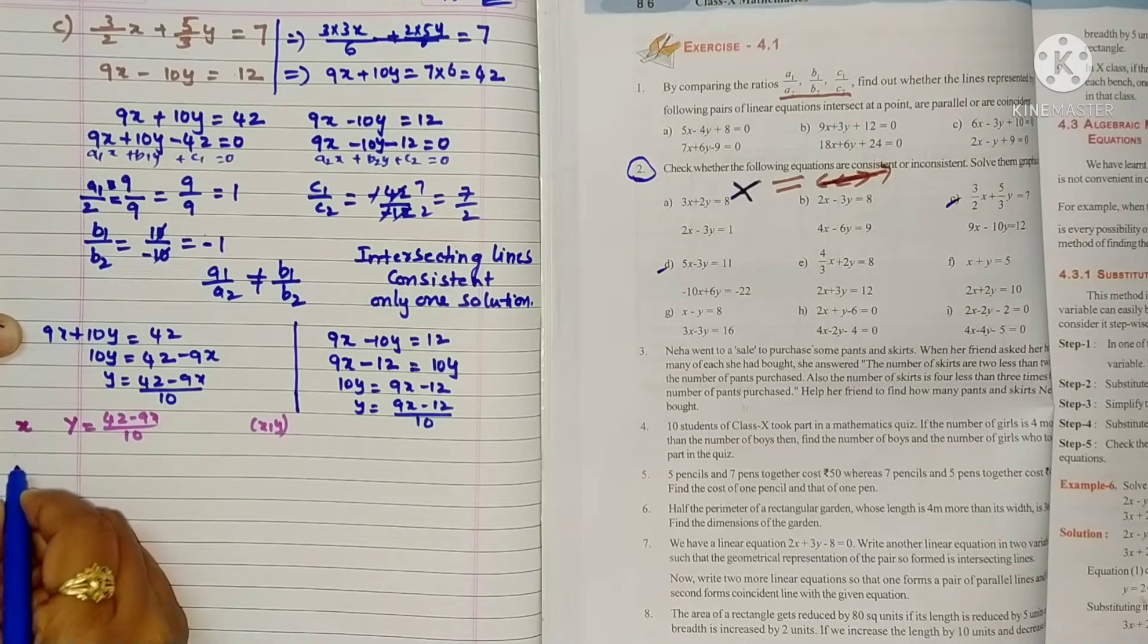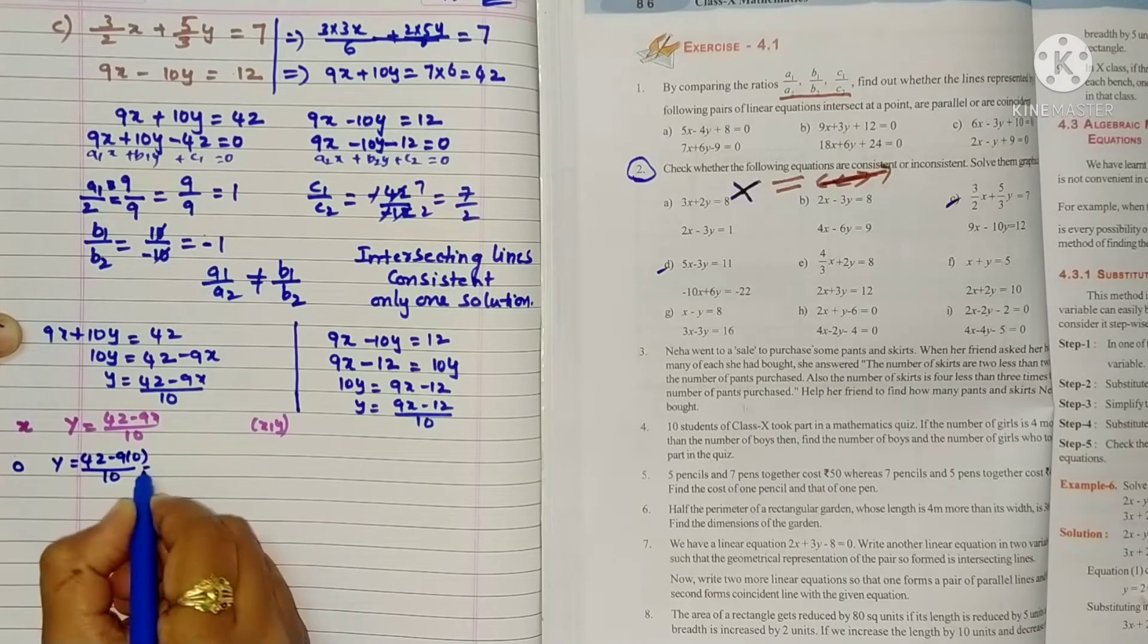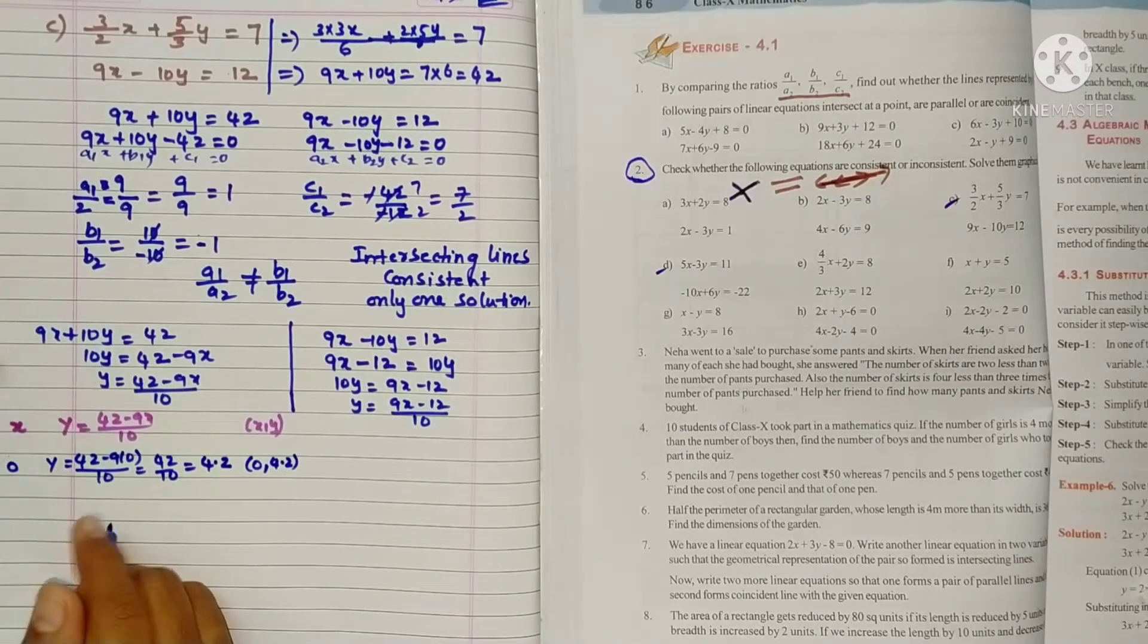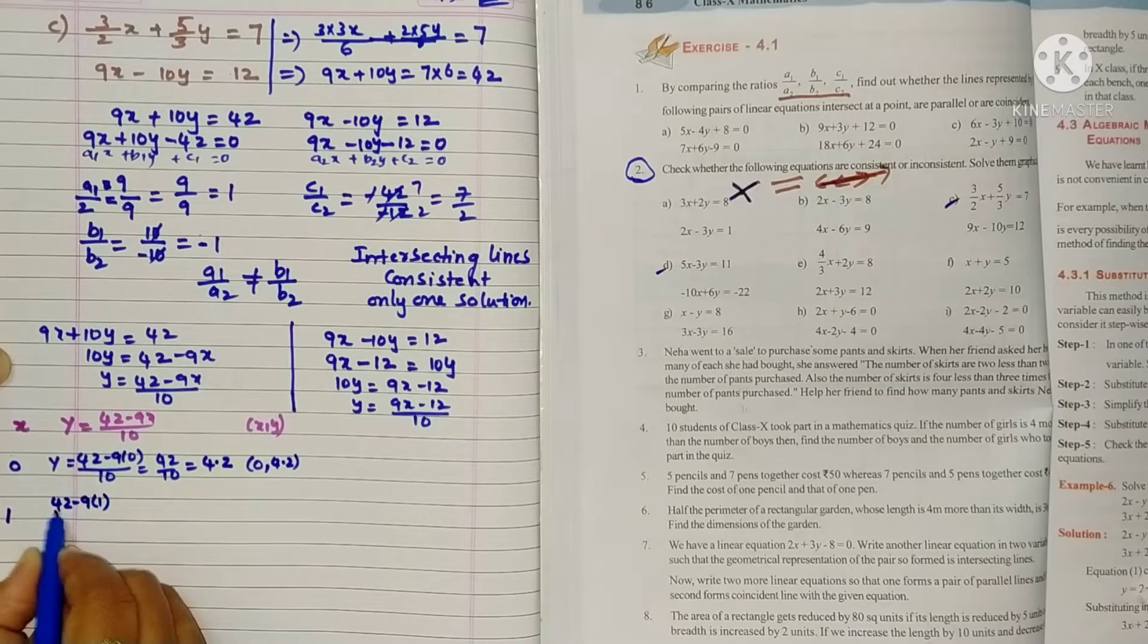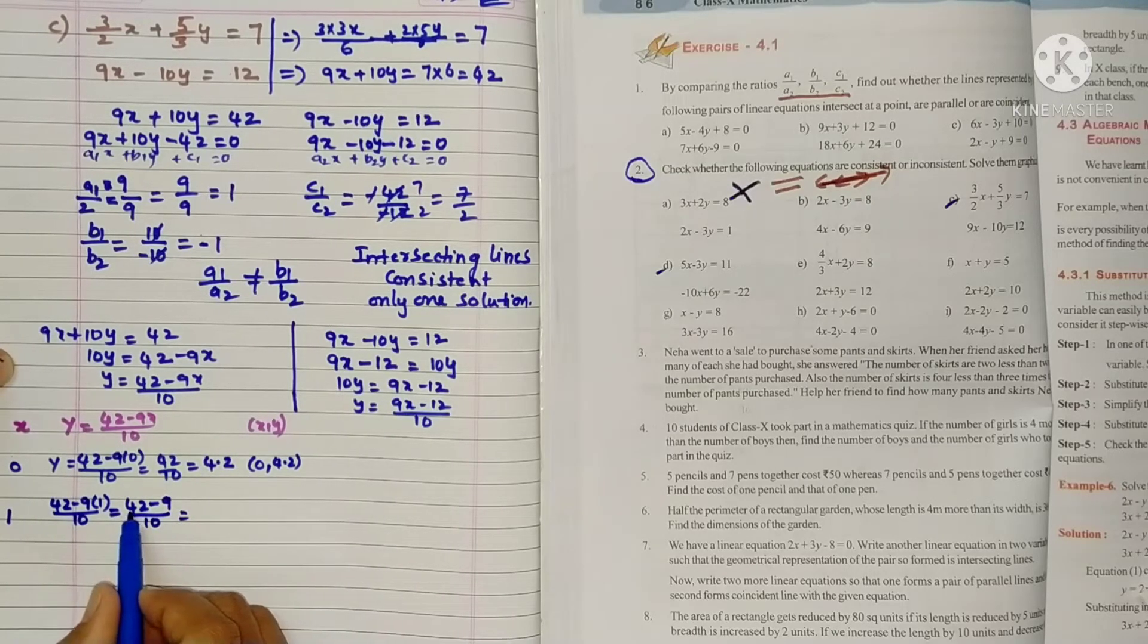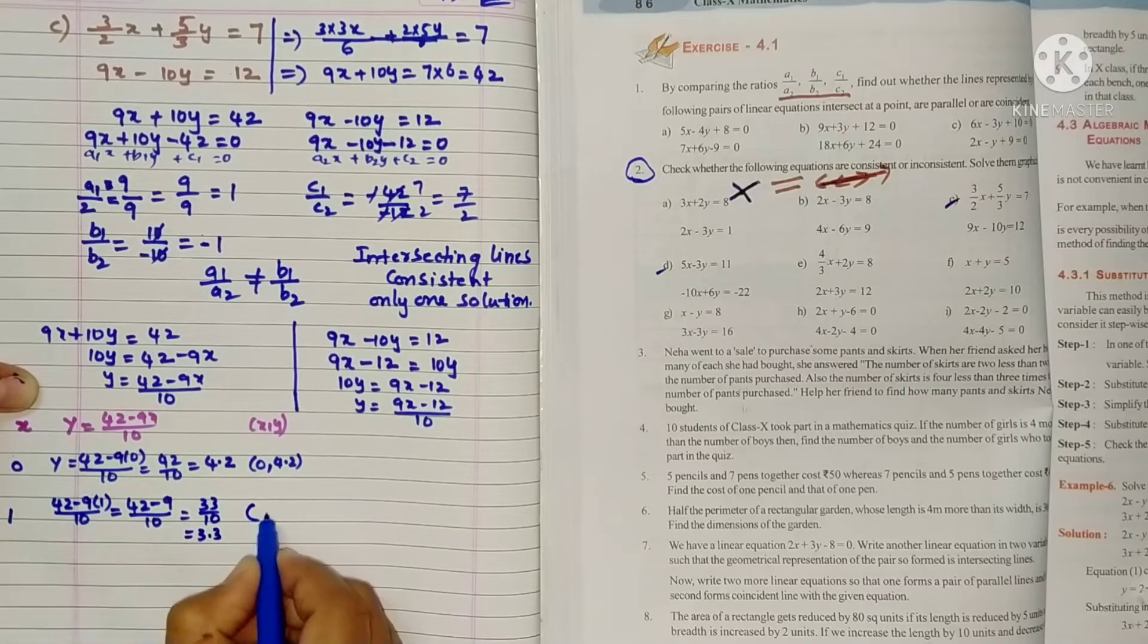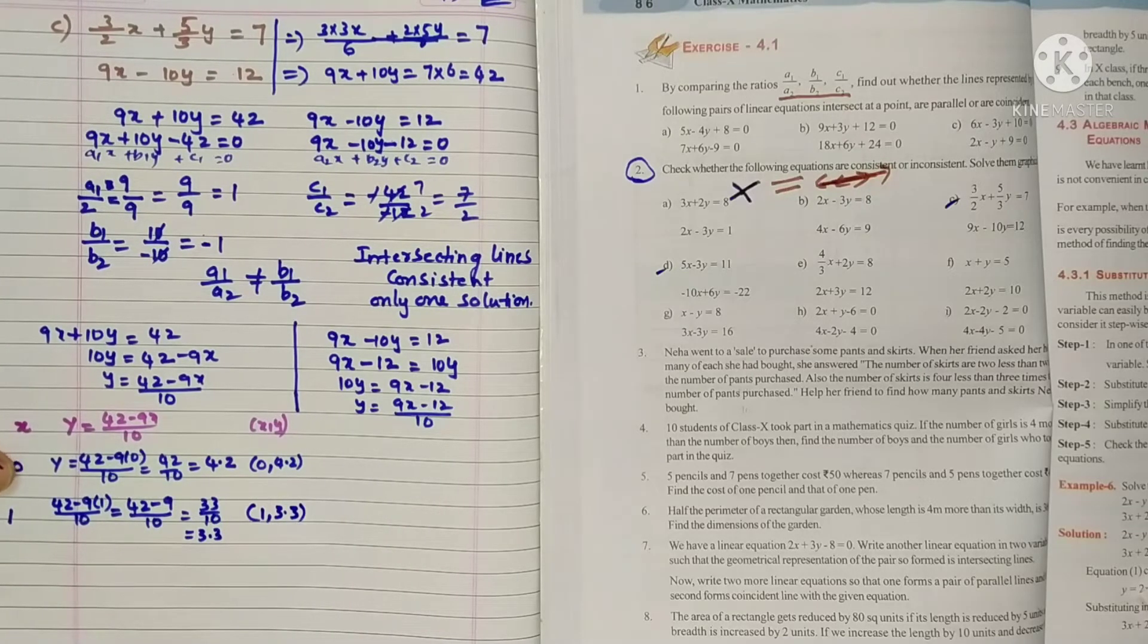First, if we take x equals 0, y equals 42 minus 9 into 0 by 10, that is 42 by 10, so 4.2. x is 0, y value is 4.2. Next, x value 1, so 42 minus 9 into 1 by 10, that's 42 minus 9 by 10. 9 ones are 9, so 42 minus 9 is 33 by 10, so 3.3. x value 1, y value 3.3.